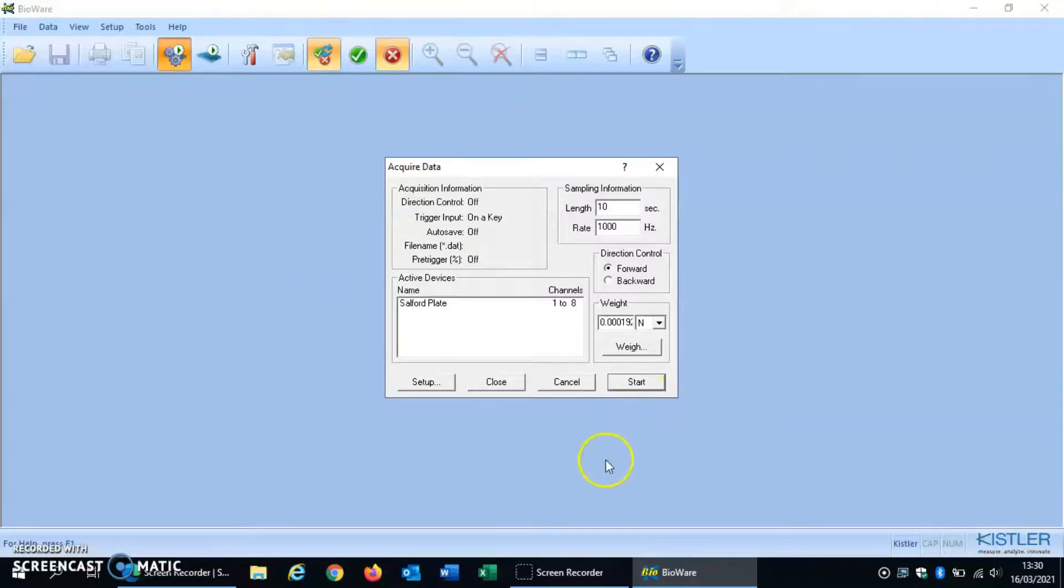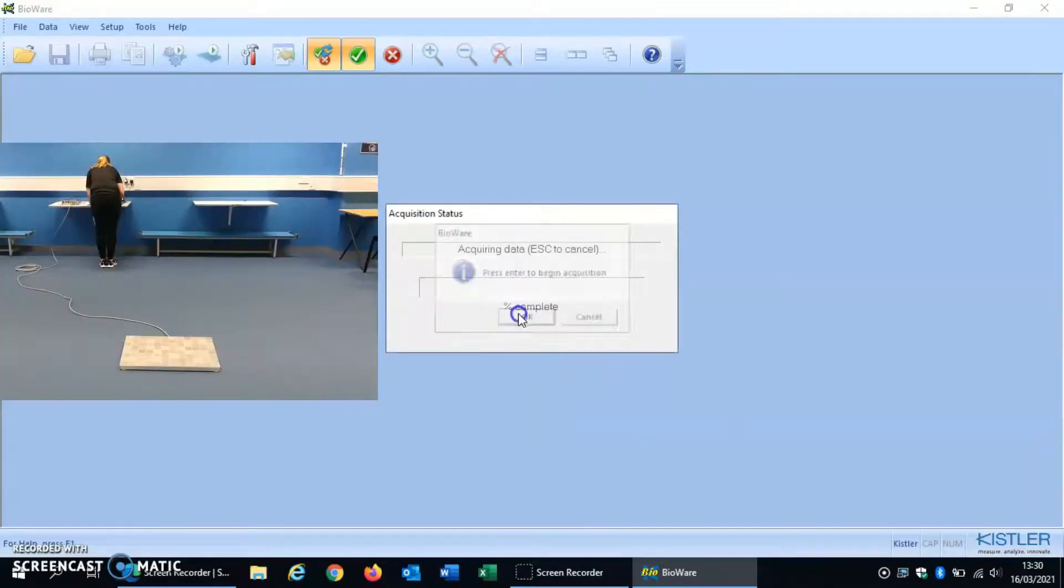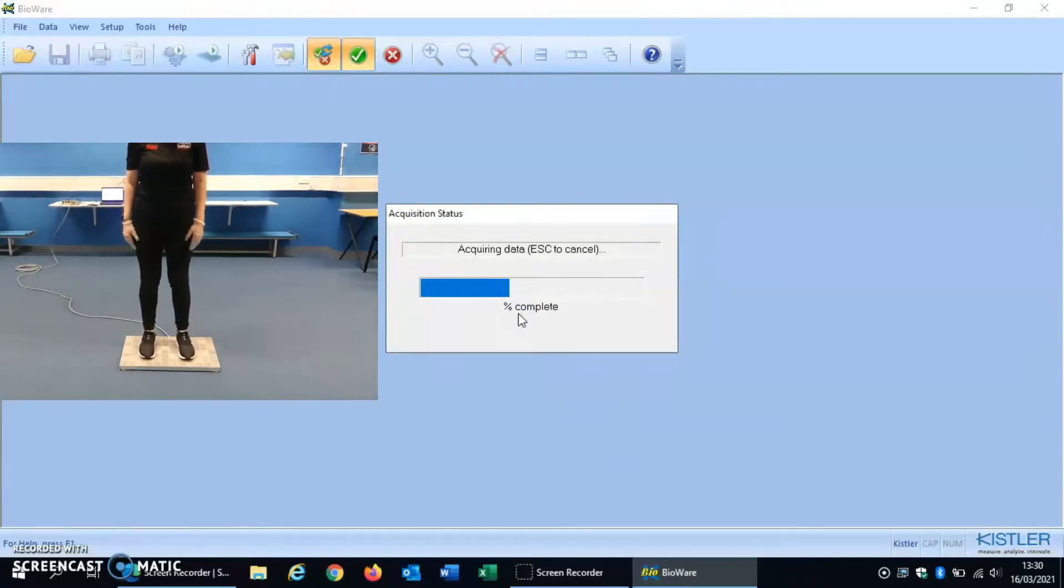Next you can change the length so I'm going to change it to just 10 seconds to check the force plate's working okay and press start. The force plate's then zeroed. I've now pressed okay and I'm walking over just to stand on it. Again this isn't a trial I'm just checking using my own body weight that it's working fine.